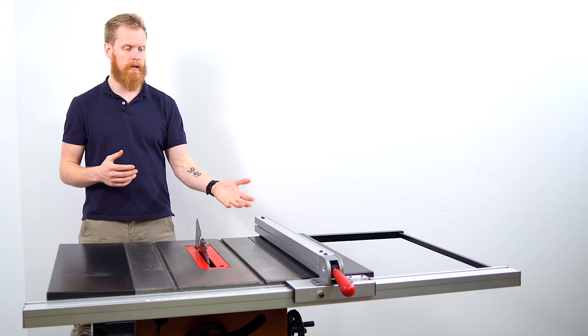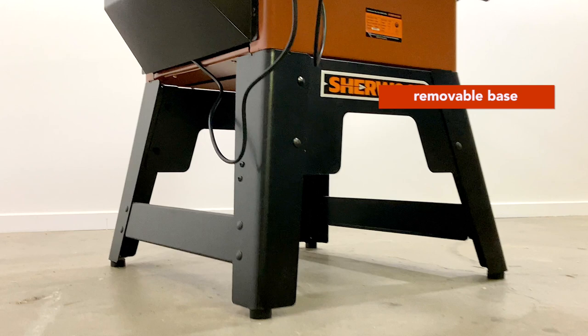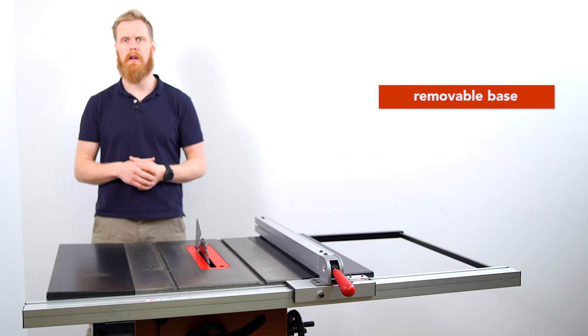You can take the base off the saw itself for increased maneuverability so that you can build it, chuck it straight onto your workbench, you can chuck it in your tray in the back of the ute, you can throw it in the back of the van and take it out on site and get it set up.